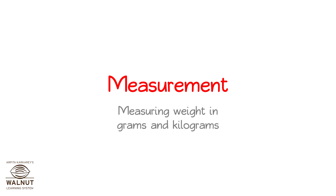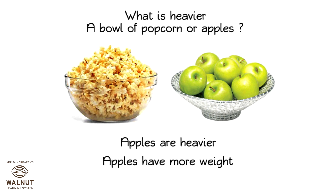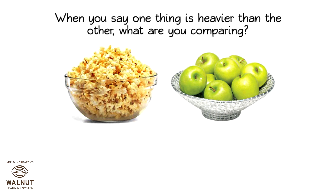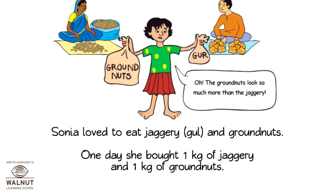Measuring weight in grams and kilograms. What is heavier — a bowl of popcorn or apples? Apples are definitely heavier. That means apples have more weight. When you say one thing is heavier than the other, what are you comparing? You are comparing the weight. We measure weight in kilograms. Kilogram is also written as kg.